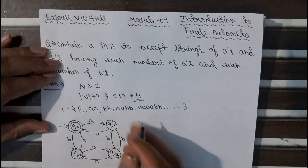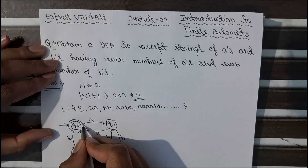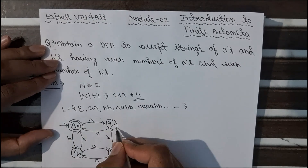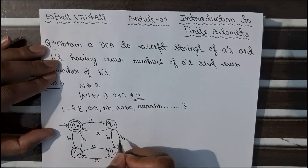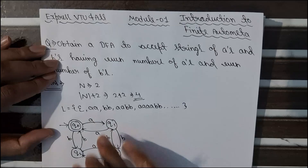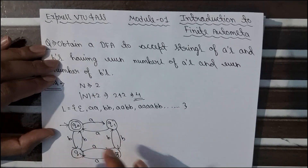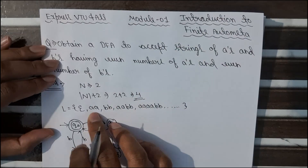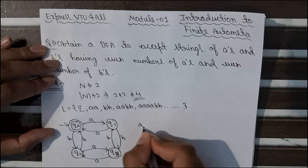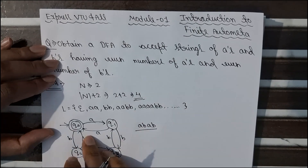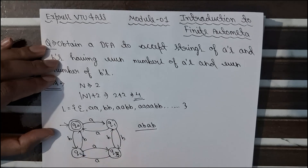As we can clearly see from this DFA diagram, starting from initial state Q0: with A we go to Q1, then B takes us further, then A and B bring us back — so it accepts even number of A's and even number of B's. This satisfies all the conditions. Strings like AA, BB, AABB, and alternating strings like ABAB are also accepted, since they all have even numbers of A's and even numbers of B's.